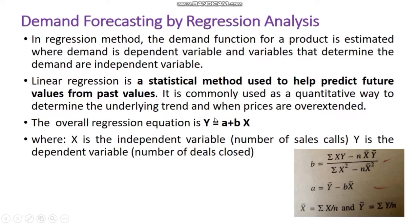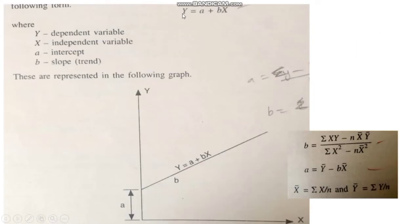Here x is the independent variable — number of sales calls — whereas y is the dependent variable — number of deals closed. For constants a and b, we have: a = ȳ − b·x̄, where ȳ is the average y value and x̄ is the average x value. We calculate b first, then x̄ = Σx/n and ȳ = Σy/n, and substitute to estimate a and b.